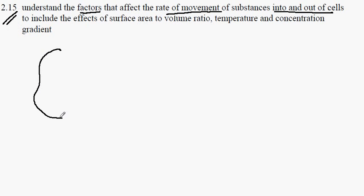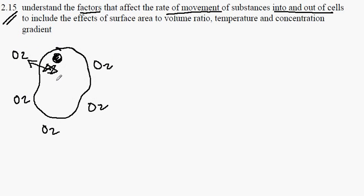So if we have a cell, we're looking at the rate at which substances move into and out of that cell, the different factors that affect that. For instance, we could have a cell with oxygen around it like this and the cell is carrying out respiration on the inside. So the concentration here is low and the concentration here is high.